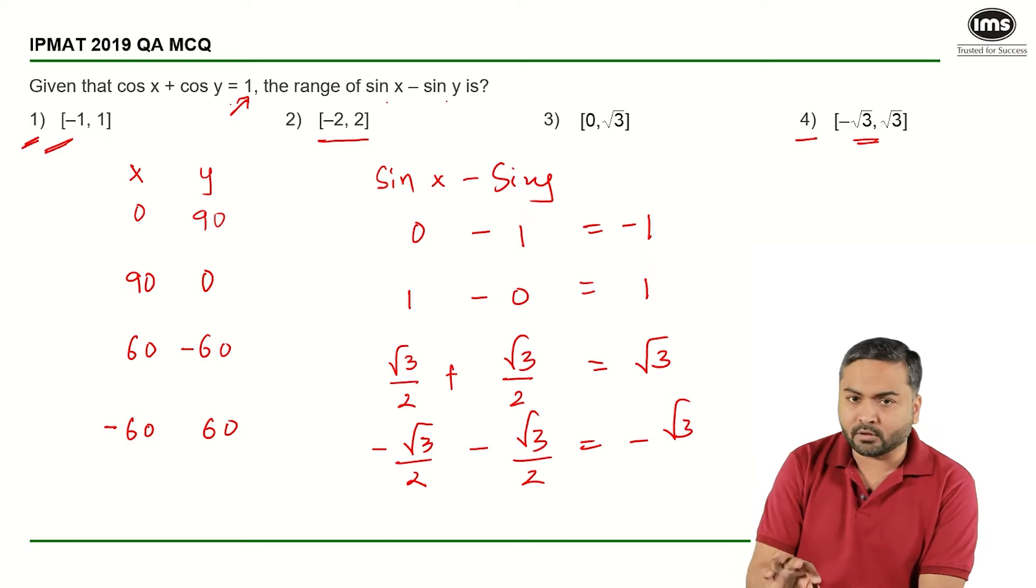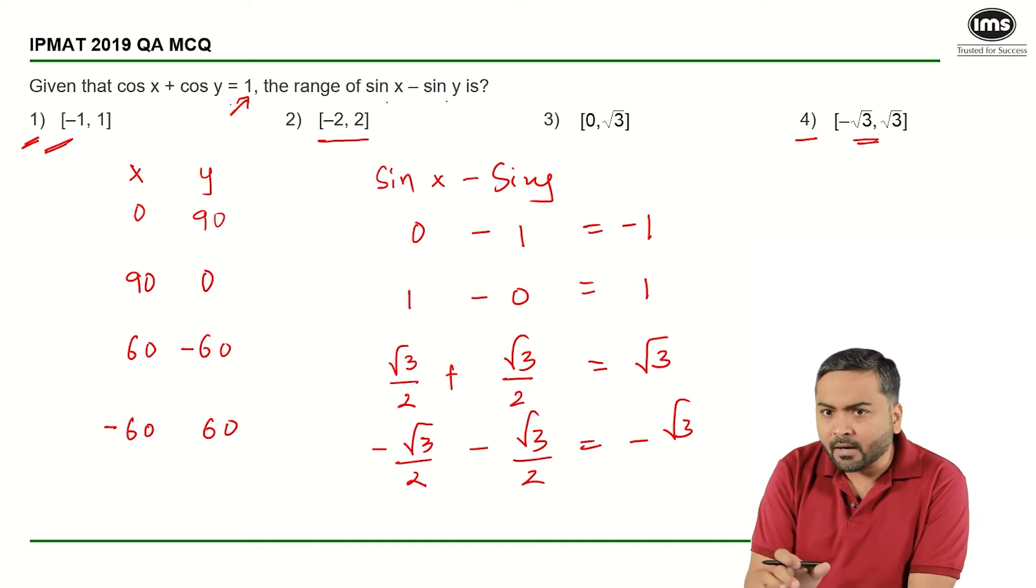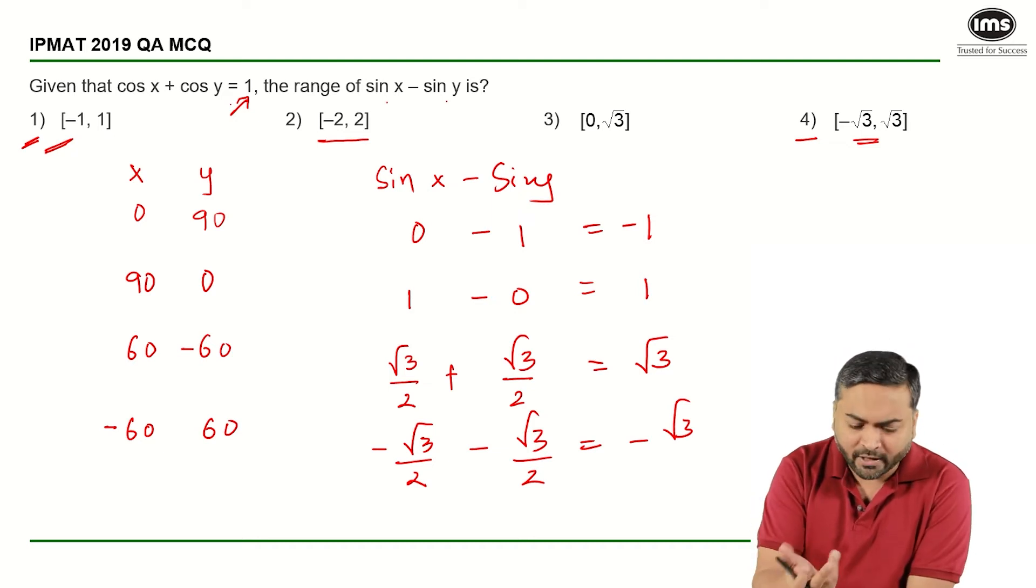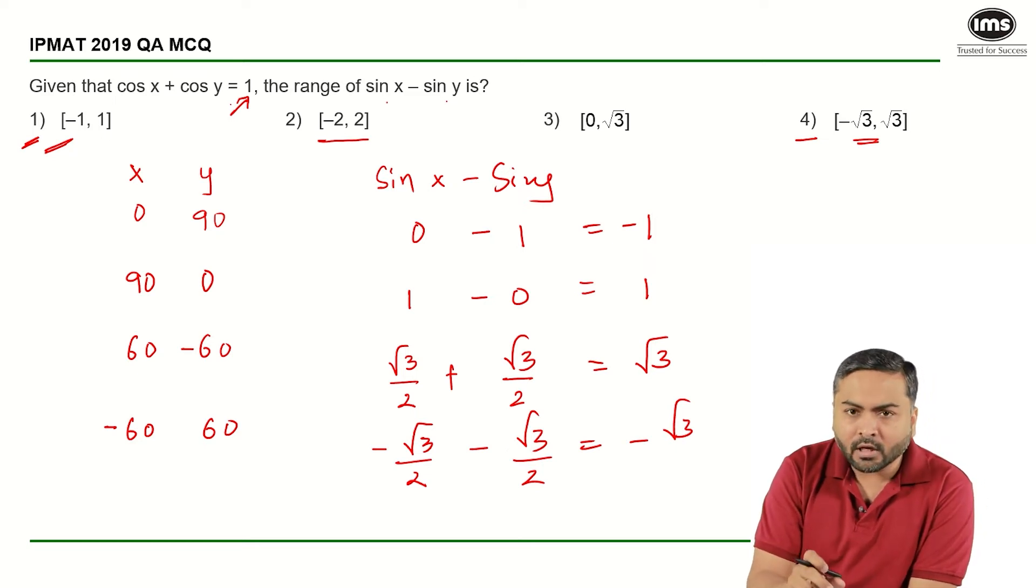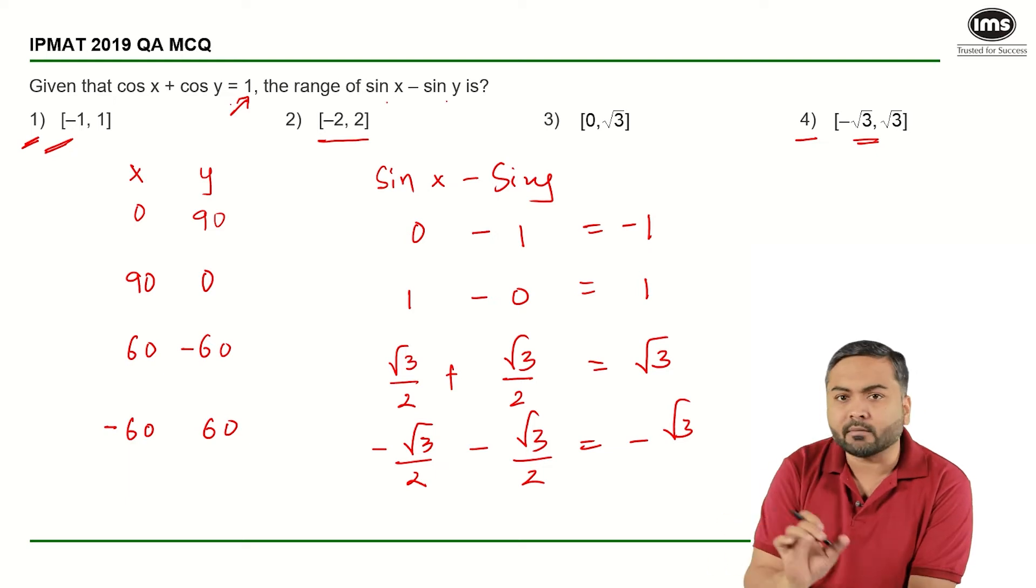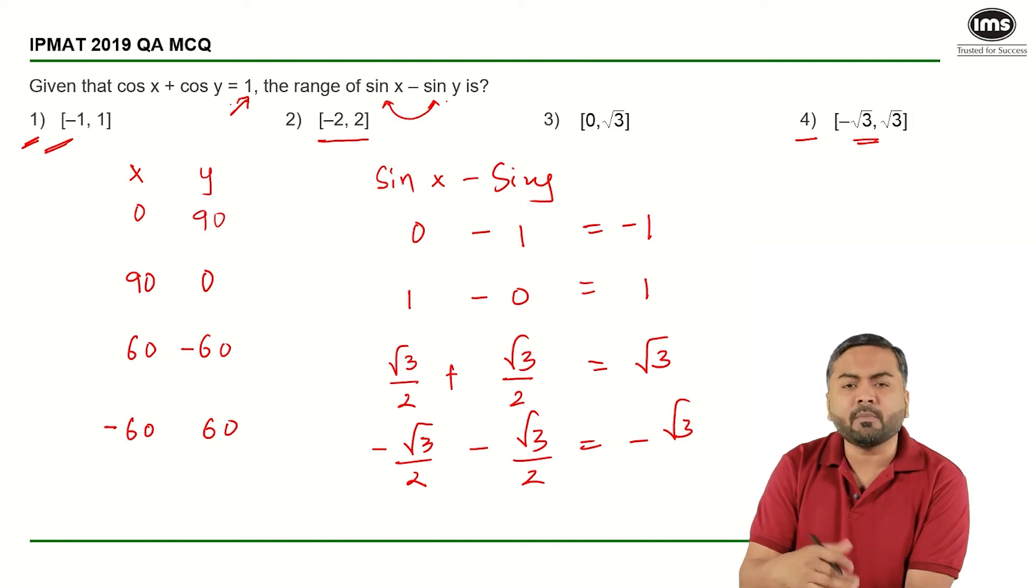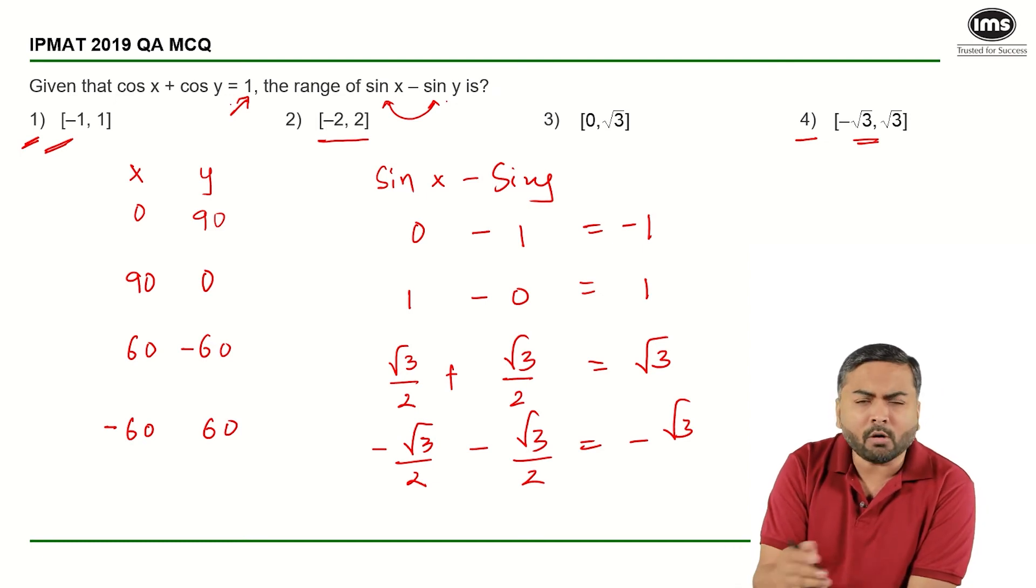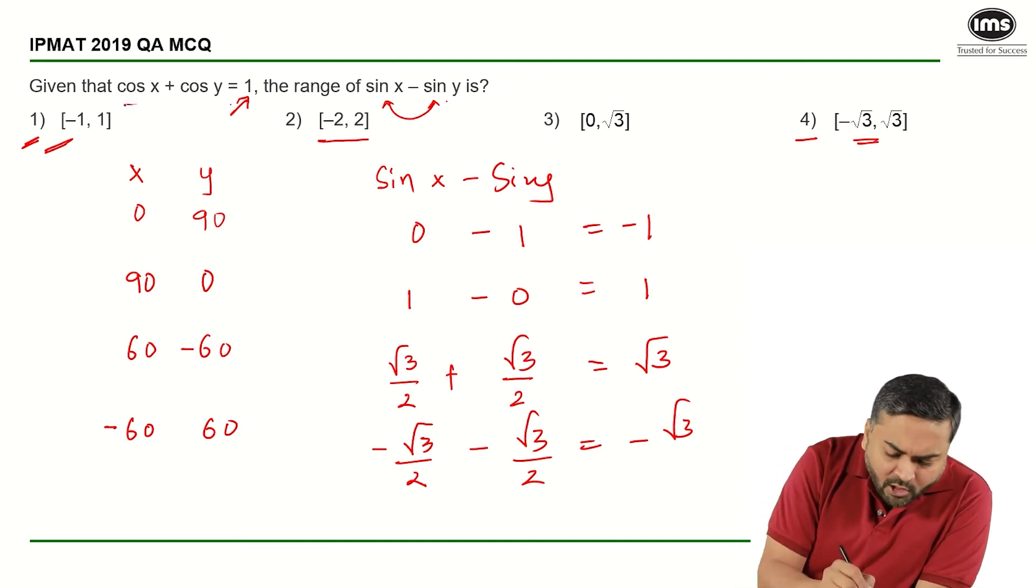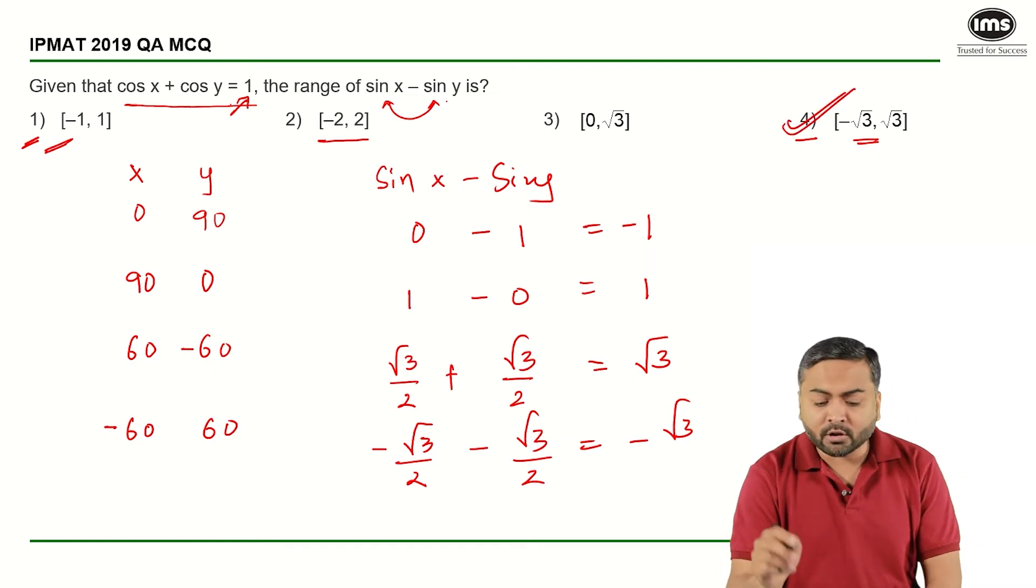Now for sin x minus sin y to equal 2, can it be equal to 2 or minus 2? See guys, sin x and sin y are always between minus 1 to plus 1. The difference of two values can never equal 2, because the maximum value that each one can take is 1 or minus 1. For the corresponding values that satisfy the equation, it will never equal 2 or minus 2. And hence your answer for this particular question has to be fourth option, that is minus √3 to plus √3.